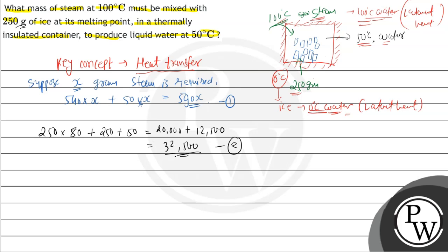For 32,500, we have required x grams, 590x grams.